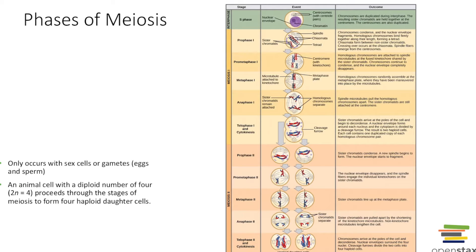Meiosis is going to have two rounds of cell division: meiosis I and meiosis II. Each round is going to have a prophase, a prometaphase, a metaphase, an anaphase, and a telophase and cytokinesis. If you see roman numeral I, you're in the first round — meiosis I. If you see roman numeral II, you're in the second round — meiosis II.